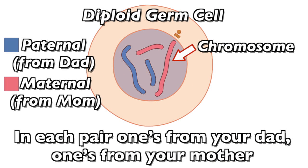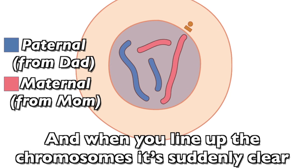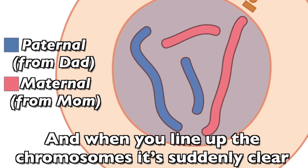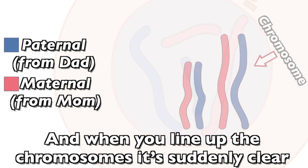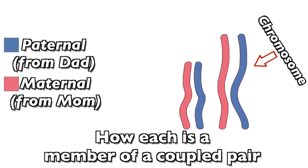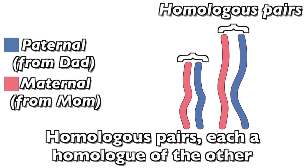Germ cells are diploid, and what that means is that the chromosomes are paired up in teams. In each pair, one's from your dad, one's from your mother. When you line them up, the chromosomes are suddenly clear — how each is a member of a coupled pair: homologous pairs, each a homologue of the other.